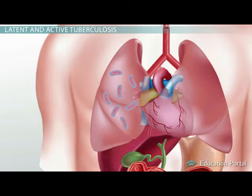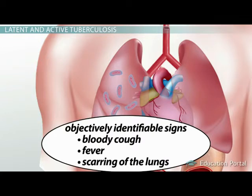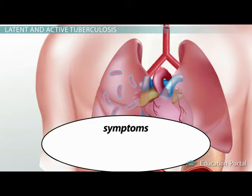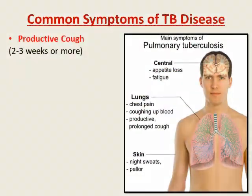The disease-causing form of tuberculosis can cause signs — objective, identifiable things — such as a bloody cough, fever, and scarring of the lungs, as well as symptoms — subjective experiences that aren't readily measured by objective standards — such as fatigue.